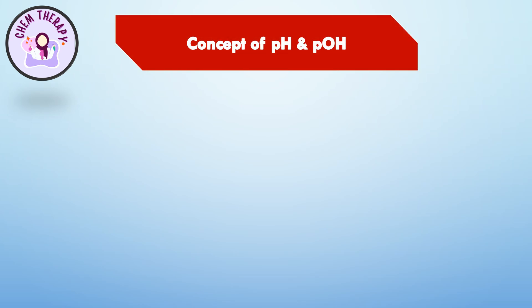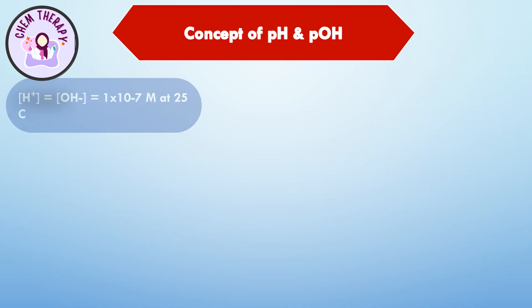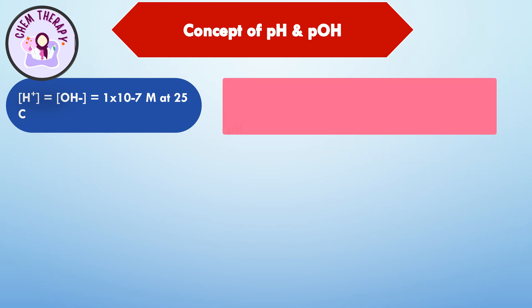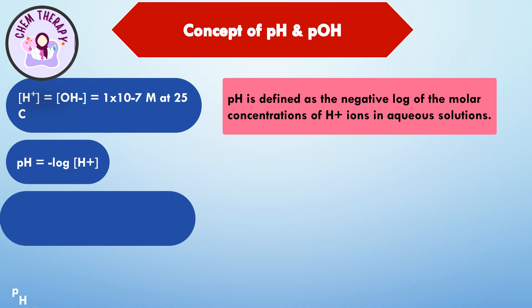As the value of ion concentrations is very small, a Danish chemist, Søren Sørensen, introduced the concept of pH and pOH in 1909 to convert them into more convenient values. pH is defined as the negative log of the molar concentration of hydrogen ions in aqueous solution. Putting in the value of hydrogen ion concentration and taking the negative log gives pH = 7.